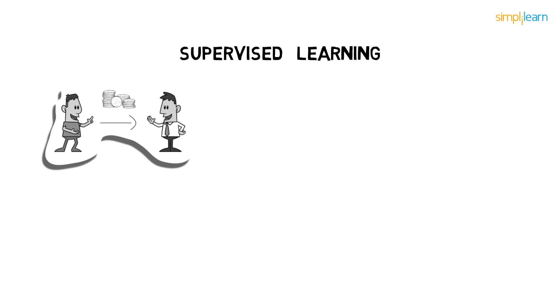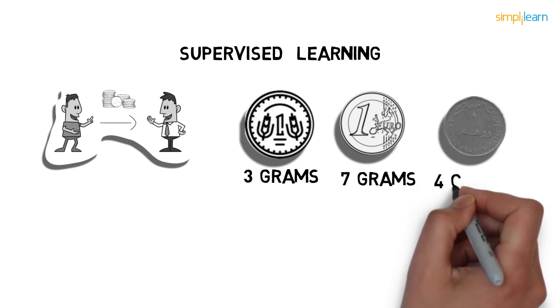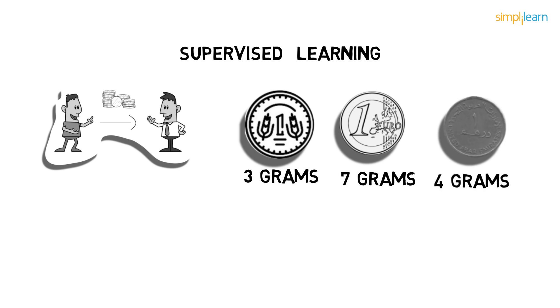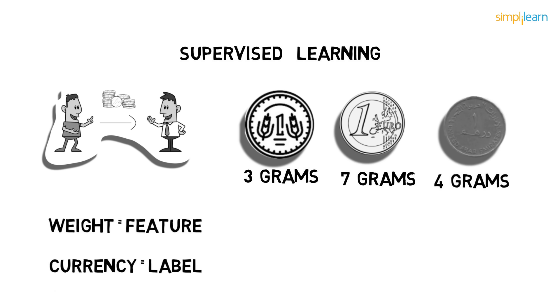Suppose your friend gives you 1 million coins of 3 different currencies: 1 rupee, 1 euro, and 1 dirham. Each coin has different weights. For example, a coin of 1 rupee weighs 3 grams, 1 euro weighs 7 grams, and 1 dirham weighs 4 grams. Your model will predict the currency of the coin. Here, your weight becomes the feature of coins, while currency becomes their label.